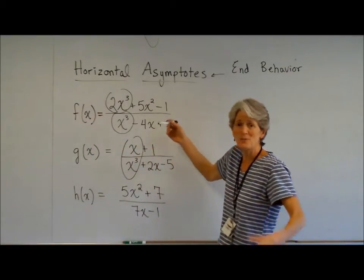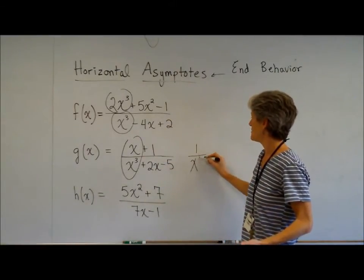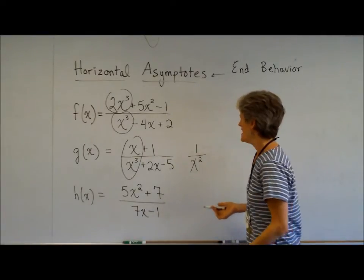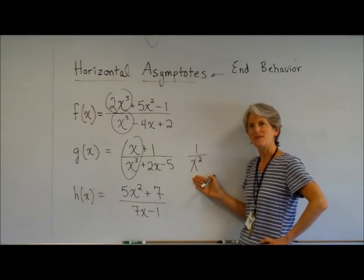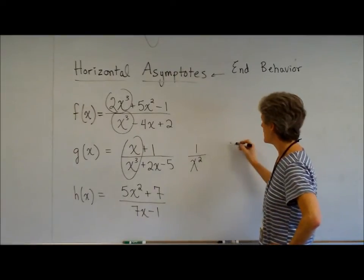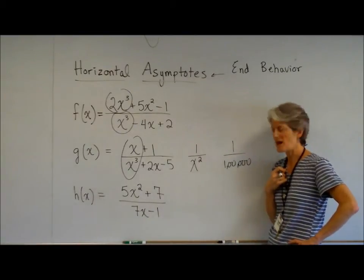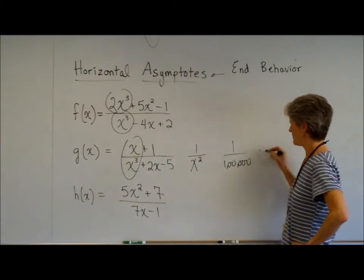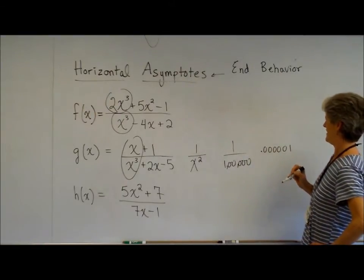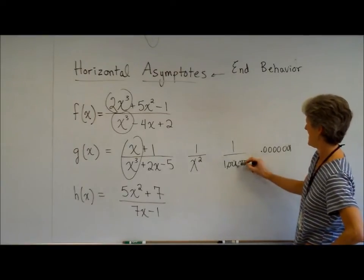Well, if I'm dividing an X by an X cubed, it's kind of like 1 over X squared, if you want to think about it like that. If I'm plugging in a big X — one over a million, one over a billion — if I plug that into my calculator, what would I get? That's 0.0000001. That's not a lot. A million has six zeros, but we get the idea — one millionth is not a very big number.